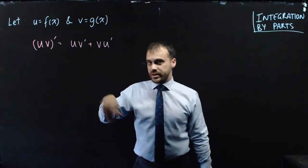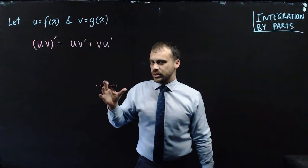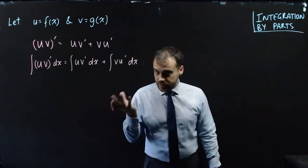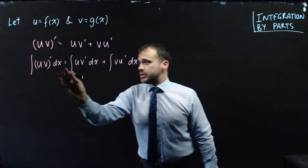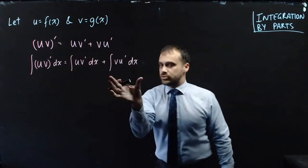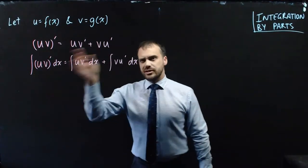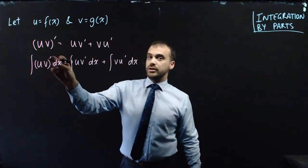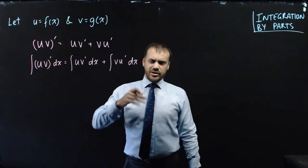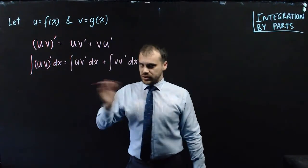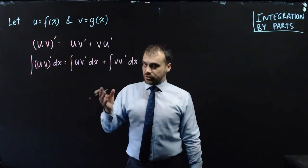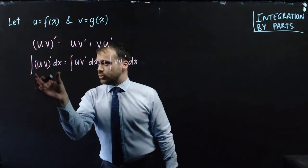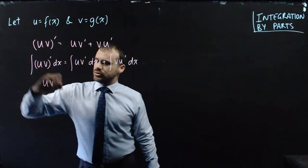I'm going to manipulate this to create the integration by parts formula. The first thing I'm going to do is take the integral of both sides. So now we've got the integral of that equals the integral of that plus the integral of that. It's really interesting because it's uv', and the integral of the derivative — because derivatives and integrals are reverses — the integral of the derivative is just the original. That is to say that all of that is just equal to uv.